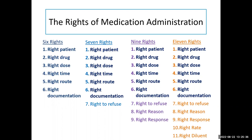Nine rights: we include the right to refuse, and now you're also looking at whether this is the right reason and whether the patient is having the right response. The right reason really goes to those PRN drugs for you as the nurse — am I giving this for the right reason? For other drugs ordered every day, every 12 hours, or every six hours, you should understand as the nurse why they're getting it. If you don't understand, that is absolutely a conversation to have with the prescriber. The right response is something you should always be evaluating for — therapeutic response to any intervention you have done.